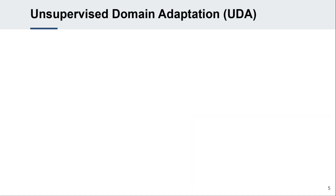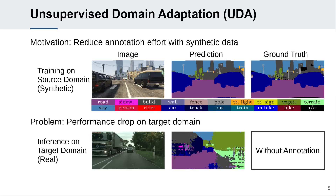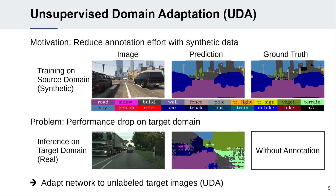After this quick overview, we will take a more in-depth view, starting with the purpose of UDA. Training neural networks usually requires expensive human annotations of real-world images. Therefore, it would be desirable to exploit other domains that are easier to annotate, such as synthetic data. However, a model trained on a source domain typically experiences a performance drop when applied to the target domain. To mitigate this issue, unsupervised domain adaptation methods adapt the network to the target domain using unlabeled target images.